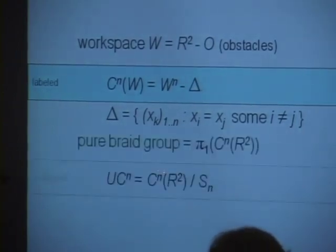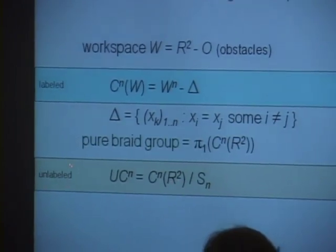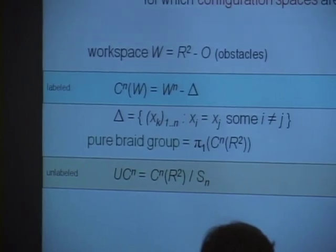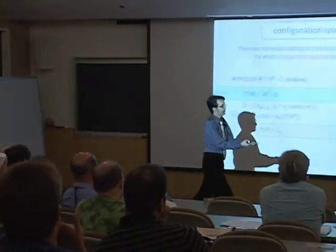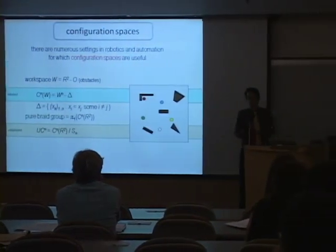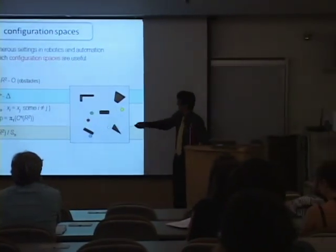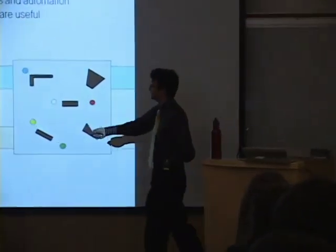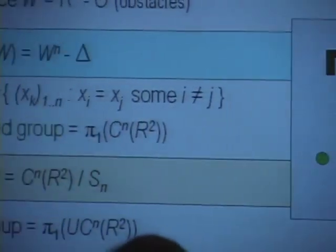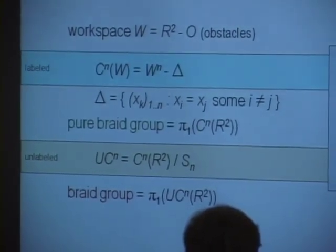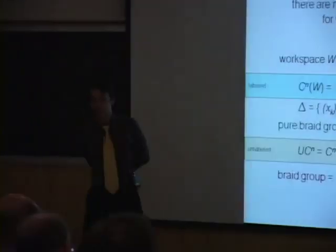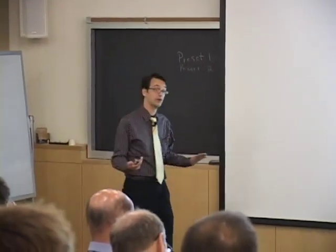You could quotient out by the action of the symmetric group to get the unlabeled configuration space. The difference from an applied point of view: in warehousing, where a package must go from one place to another, you want the labeled configuration space — the packages matter. But in a security application where any police officer just needs to arrive quickly, the unlabeled case is more appropriate. We all know that the fundamental groups of these spaces without obstacles give the classical braid groups and pure braid groups.